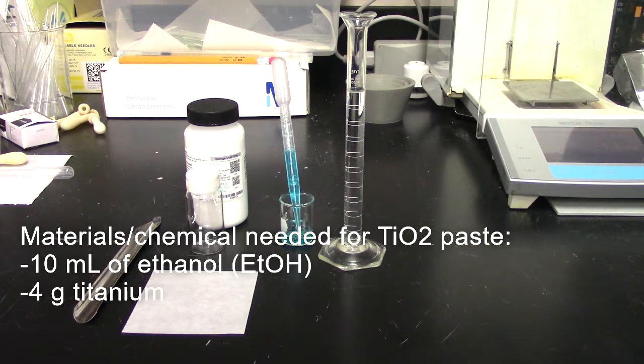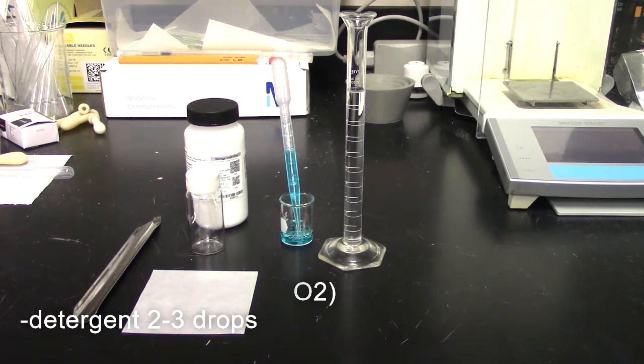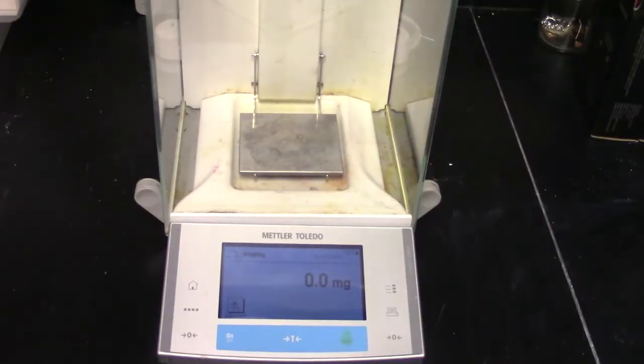Begin by obtaining the needed materials and chemicals for the TiO2 paste preparation: 10 milliliters of ethanol, 4 grams approximately of titanium dioxide powder, and 2 to 3 grams of detergent.